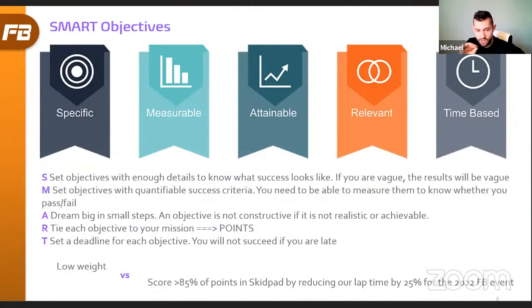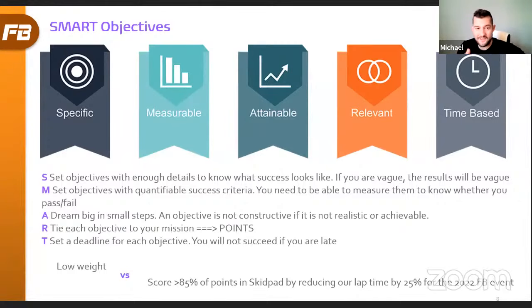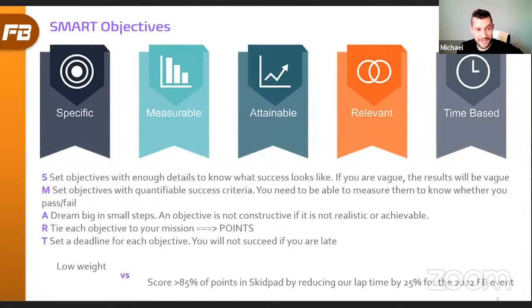Specific: when setting a specific objective, detail enough information so you know exactly what success looks like. This is important not only when working alone but especially in a team. If I gave someone the vague objective 'deliver a presentation,' they might bring a presentation about video games and technically succeed. But if you say 'deliver a presentation on preparing for engineering design at the Formula Student competition,' that is specific enough that someone can use their creativity to deliver what success actually requires. If the objective is vague, the results will be vague.